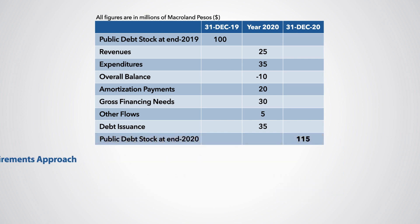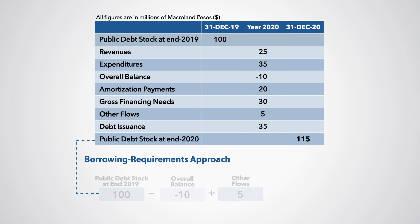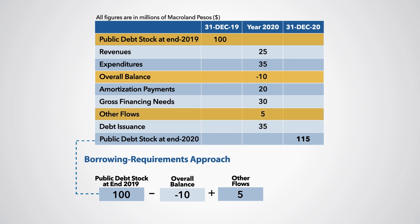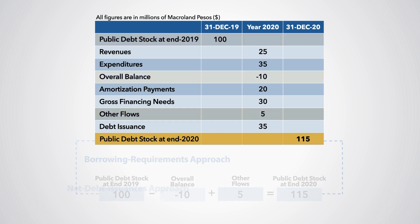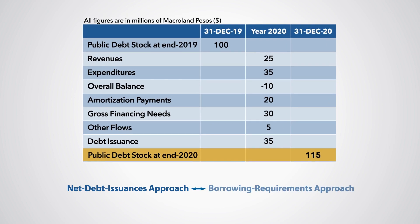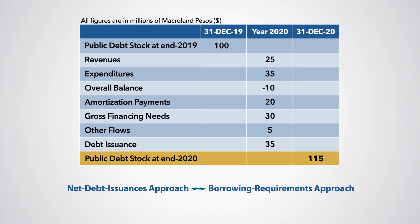Alternatively, following the borrowing requirements approach, the 2020 debt stock equals the 2019 debt stock of 100 million, minus the overall balance of minus 10 million — which is plus 10 million — and plus the other flows of 5 million. Thus, with this approach, we also project the 2020 debt stock to be 115 million Macroland pesos, illustrating how the two approaches used to project public debt yield equivalent results.